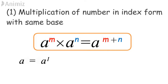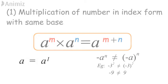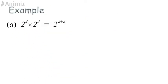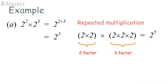Besides that, −a^n is not equal to (−a)^n, as discussed earlier. Example A: 2² × 2³ = 2^(2+3) = 2^5. By using repeated multiplication, we can prove this law.